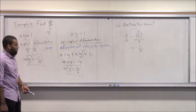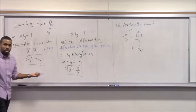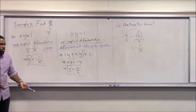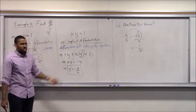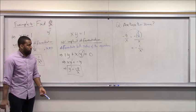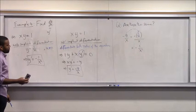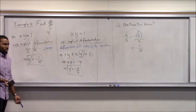If someone took the time to substitute y equals 1/x into the answer minus y over x, they'd get minus (1/x) over x, which is minus 1 over x squared — the same answer. It's just two perspectives: one where you solve for y explicitly, one where you differentiate both sides and solve for y prime.